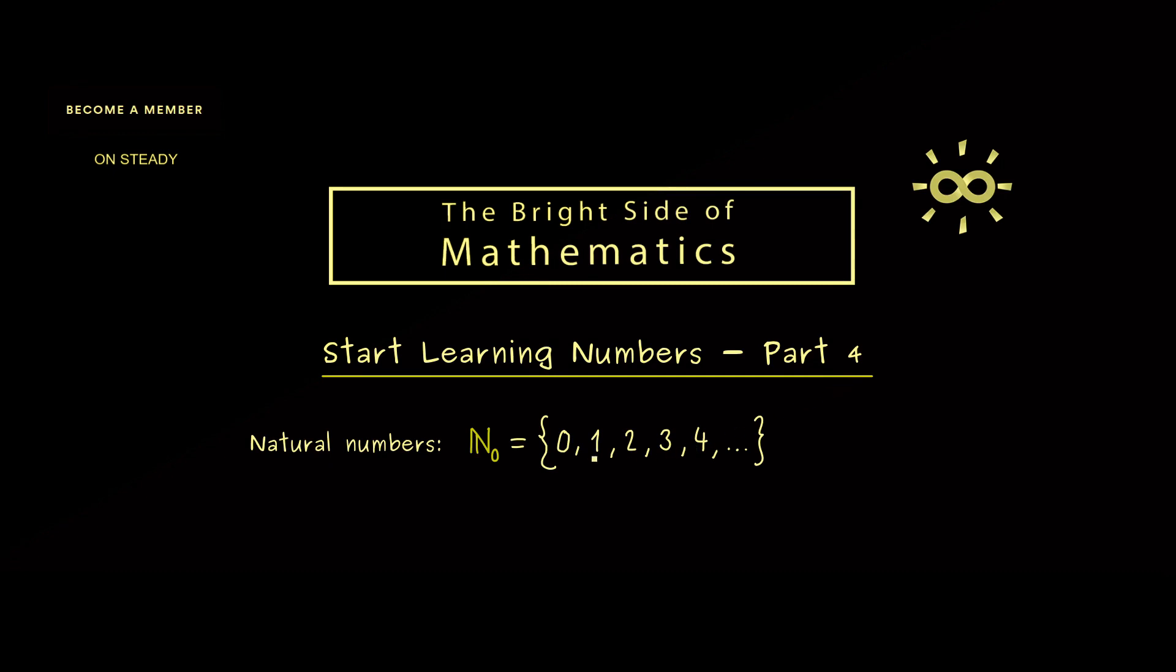In this Part 4, we are still talking about the natural numbers, which we defined as ℕ₀ starting with the number 0.